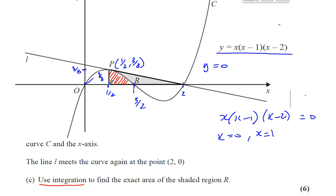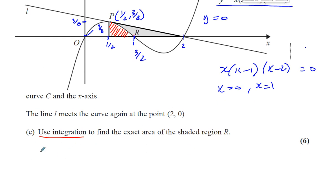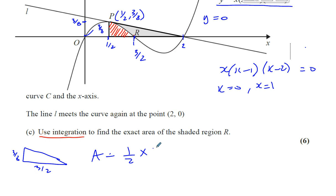So basically, if I integrate the curve between a half and 1 with respect to x, I will find the area that I don't need, and I take that away from the triangle area. Let's first find the area of the triangle. The base is 3 over 2 and the height is 3 over 8, so the area is a half times 3 over 2 times 3 over 8. That gives you 3 times 3 equals 9 over 32 — that's 4 times 8 — so 9 over 32 square units is the area of the triangle.